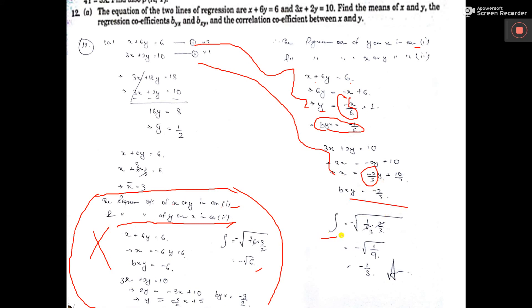Now, find rho. Since both are minus. So, minus will come from root over of bxy into byx. We are getting minus root over 1 by 9. That means, minus 1 by 3. So, this is the answer of rho. That is, correlation coefficient is rho. And the corresponding regression coefficients. This is also one answer. And this is also one answer. So, these three answers are correct.